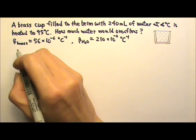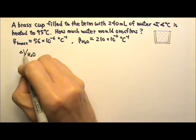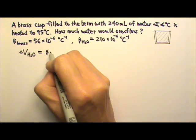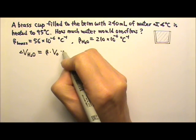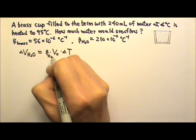When water gets heated, its volume would expand by this much: delta V equals beta times V₀ times delta T. And of course this beta is the beta for water.